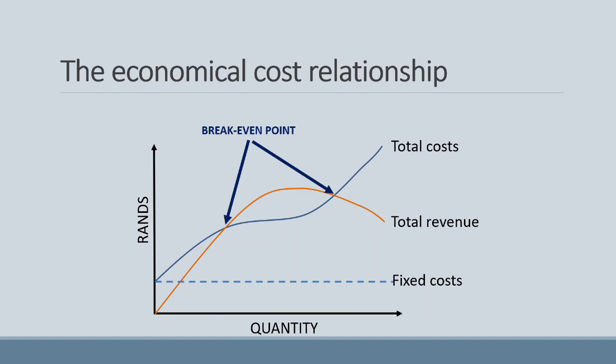You will then notice that there are two areas where the total cost line is above the total revenue line. In these areas, we will be incurring losses. Finally, there's one area where the total revenue line exceeds the cost line. In this area, we will be achieving a profit.